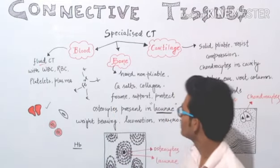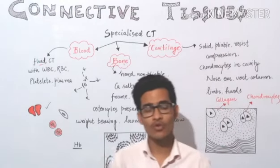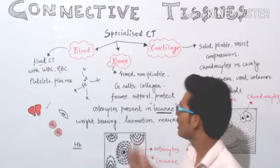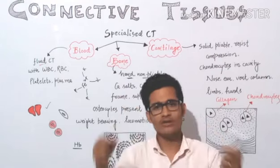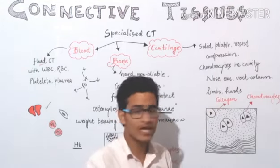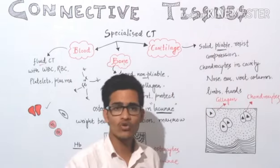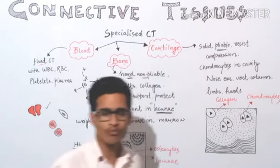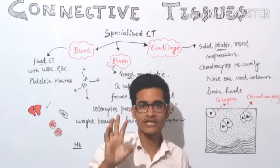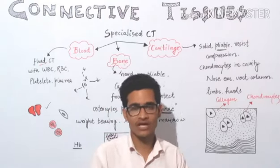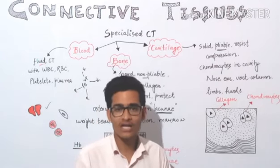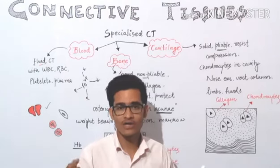The second type of specialized connective tissue is bone. We know very well that bone is very hard because bones are not easily broken — they are nearly unbreakable. They are also non-pliable, meaning they cannot be bent easily. Just opposite to that, cartilage is solid but pliable. Bone is non-pliable but cartilage is a little bit pliable — it has some flexibility. Bone has a lot of collagen fibers which provide it strength, as well as calcium salts such as calcium carbonate and calcium phosphate which give it much strength, making it more or less unbreakable.